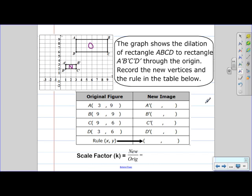Record the new vertices and the rule in the table below. So A prime is at 1, 3. B prime is at 3, 3. C prime is at 3, 2. And D prime is at 1, 2.